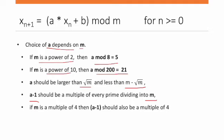And a minus 1 should be a multiple of every prime dividing into m. And if m is a multiple of 4, then a minus 1 should also be a multiple of 4.